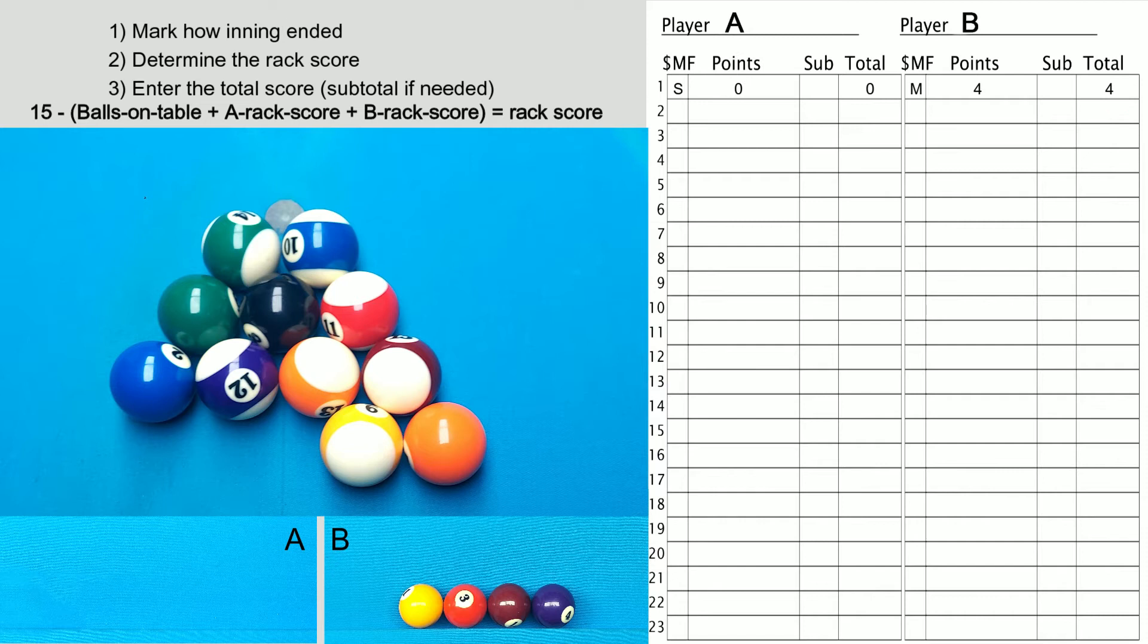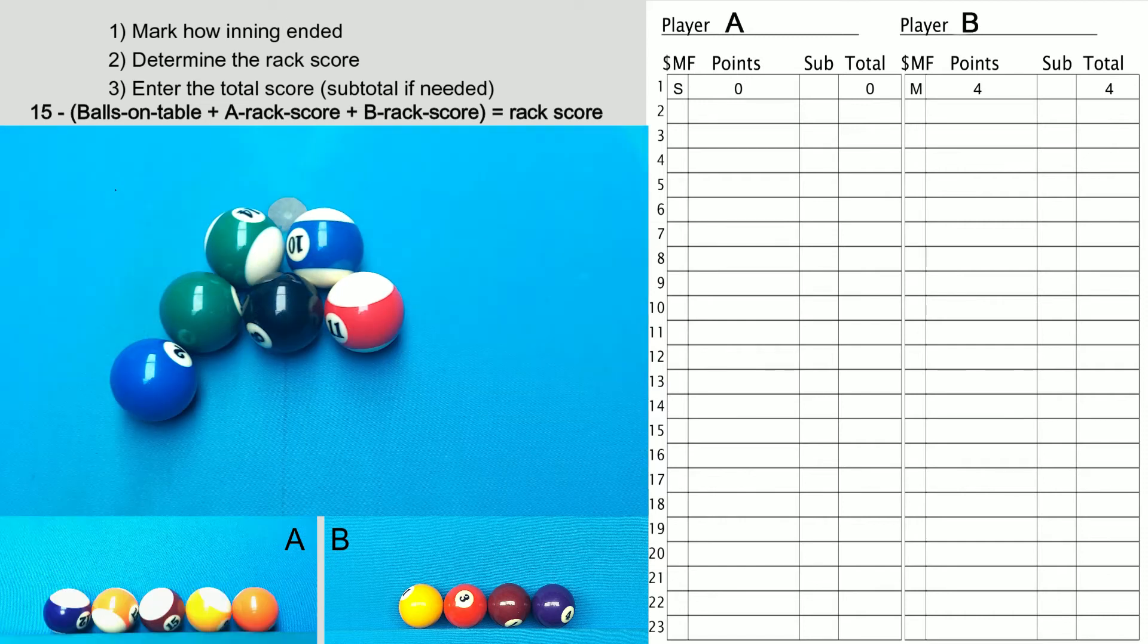Now player A steps to the table and runs some balls. We can see here that player A ran five balls, but in real life, those balls are in the pockets of the table and they're mixed with player B's balls. So how many balls did they make? Step 1: Mark an M for the inning ending miss. Step 2: Determine the rack score.